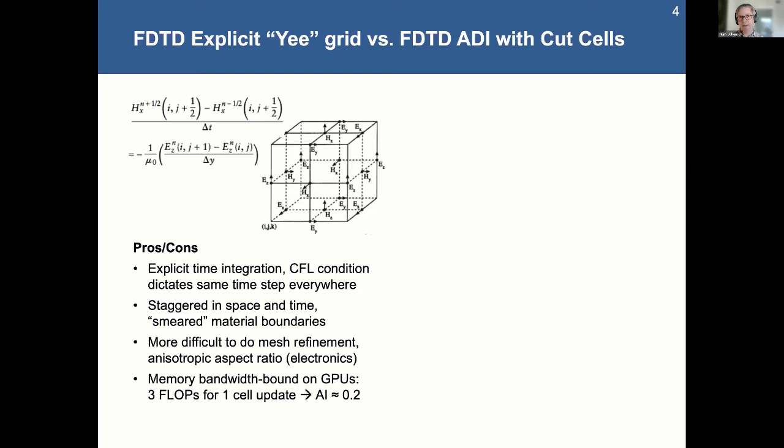That means you're wasting, you know, 99% of the GPU's capabilities because these are simple finite difference explicit updates. The arithmetic intensity, for those of you that know what that is, is much less than one. So that's even worse than a sparse matrix in a lot of cases.